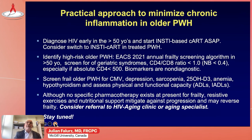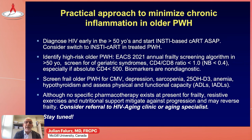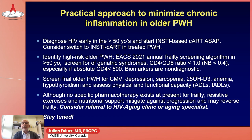To summarize, here is a practical approach to minimize chronic inflammation in older persons with HIV. It's important to diagnose HIV early in persons over 50 — we should not forget about HIV in older populations. The recommendation is to start an integrase inhibitor-based cART as soon as possible to minimize ongoing immune activation, and to consider switching to an integrase inhibitor in already treated persons. To identify high-risk older patients, follow recent guidelines for frailty screening in persons above 50, screen for geriatric syndromes, and consider those with a low CD4 to CD8 ratio, especially if their absolute CD4 count is less than 500. Biomarkers are not yet ready for routine screening.